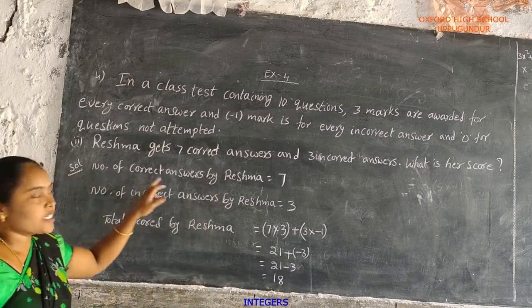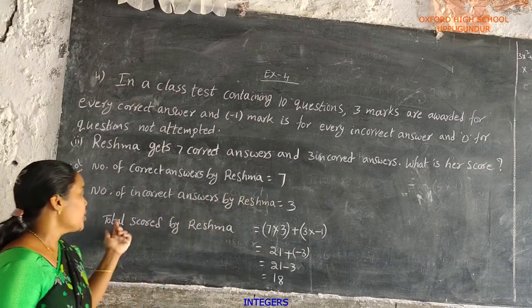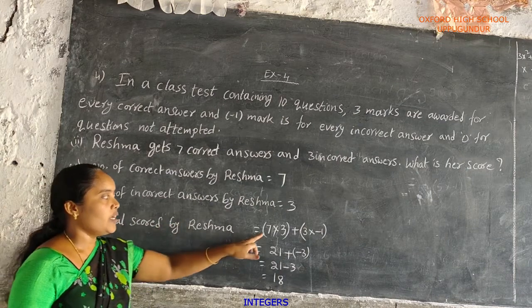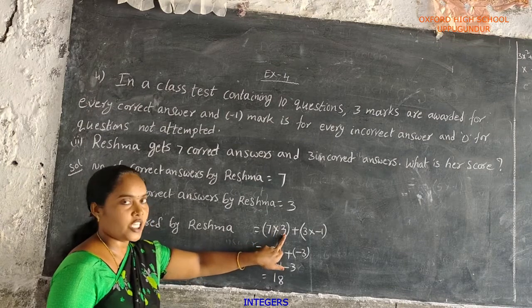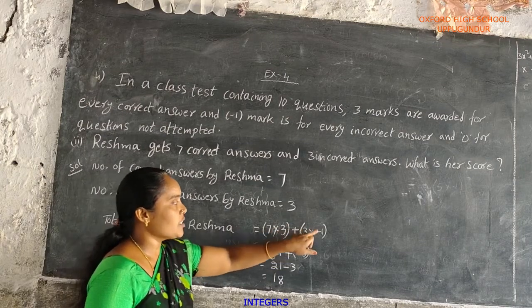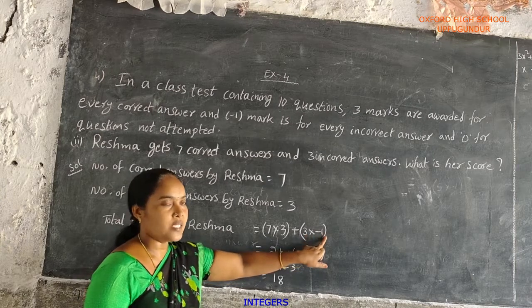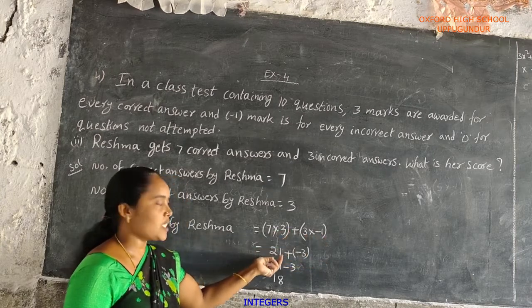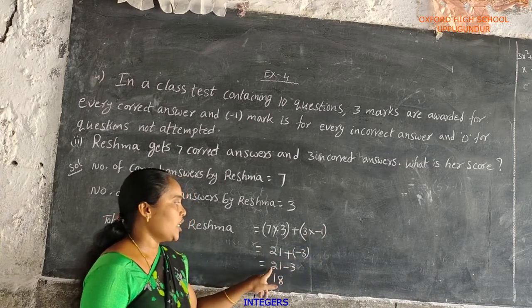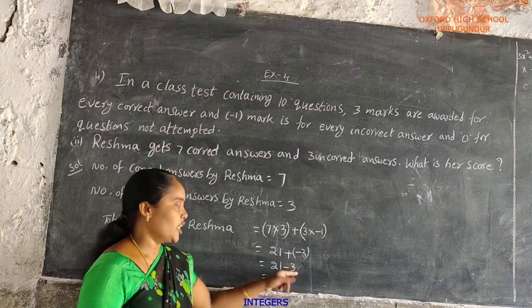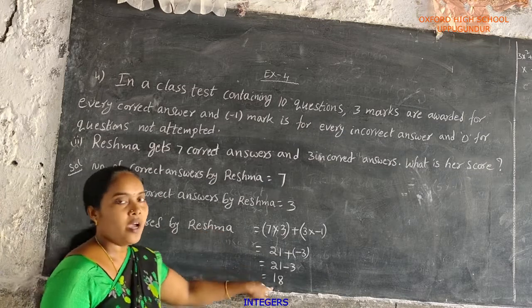Once again: number of correct answers by Reshma is 7, number of incorrect answers by Reshma is 3. Total scored by Reshma equals 7 into 3 plus 3 into minus 1 equals 21 minus 3 equals 18 marks. Total scored by Reshma: 18 marks.